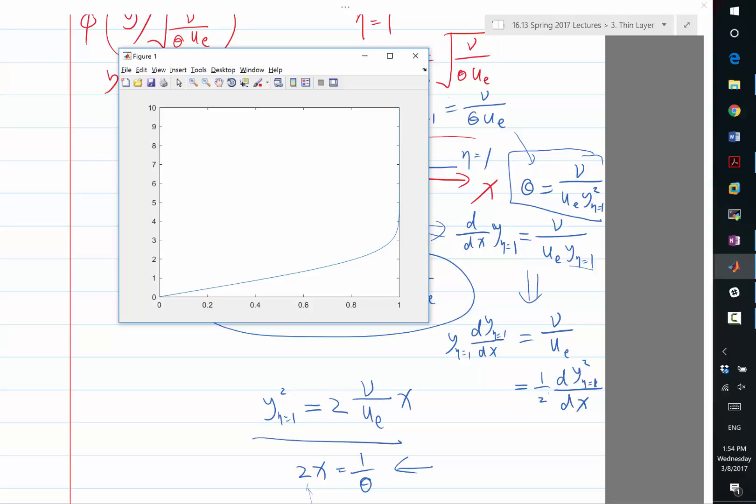So we can basically integrate all the area over here to figure out how big is the displacement thickness delta relative to my y eta equal to 1.